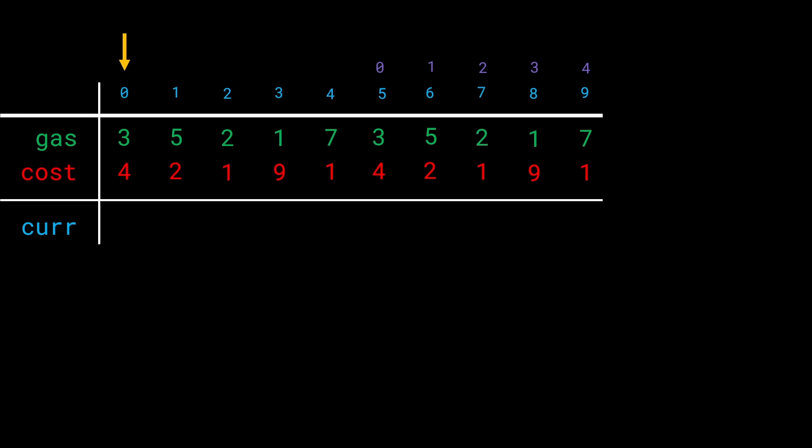Let me walk you through the solution. We assume zero is the starting index — the station that should lead us to station 5. Mark this as our starting index. We start with an empty tank, fill in 3 units of gas, and the cost is 4, which means current is -1. We have 3 units of gas but need 4 to reach the next station.